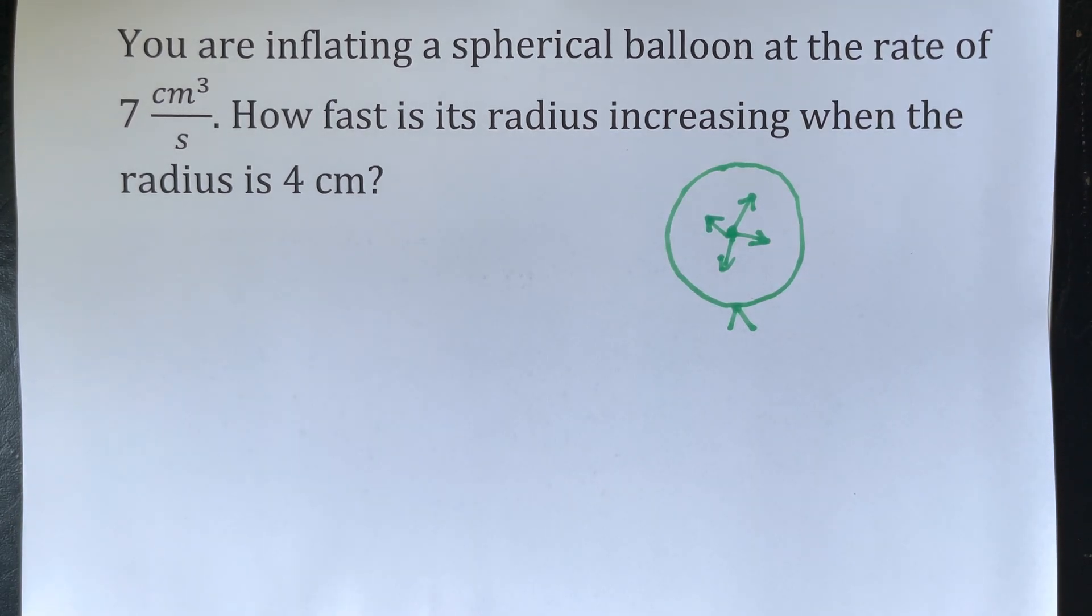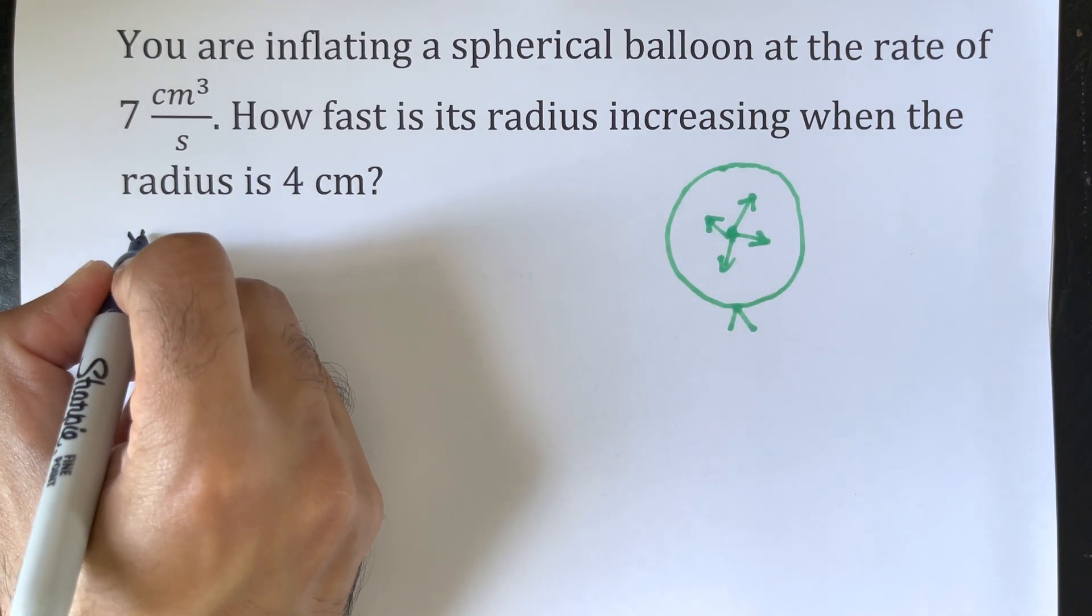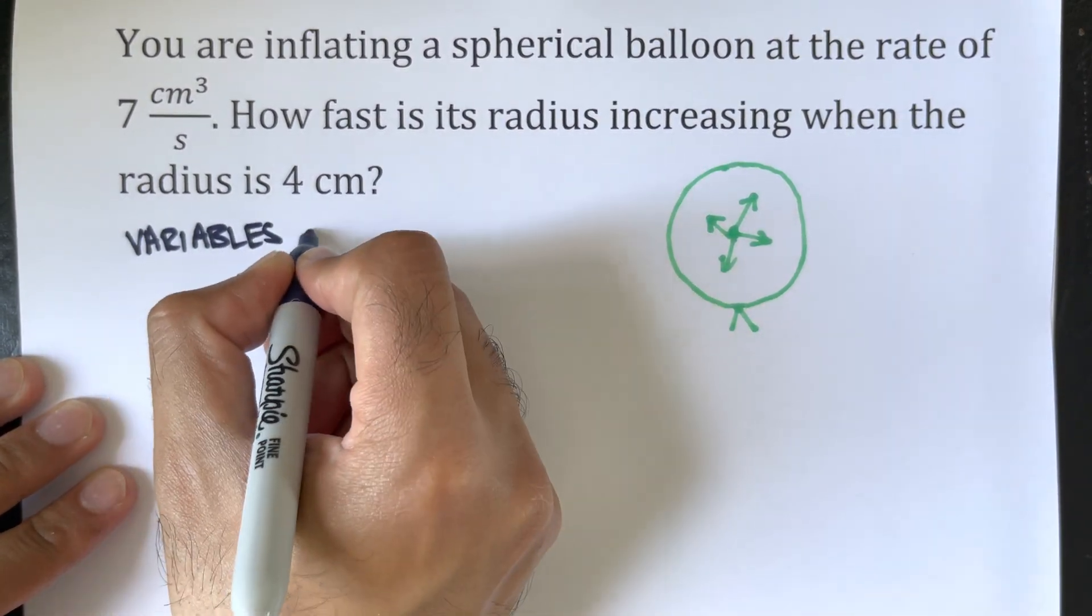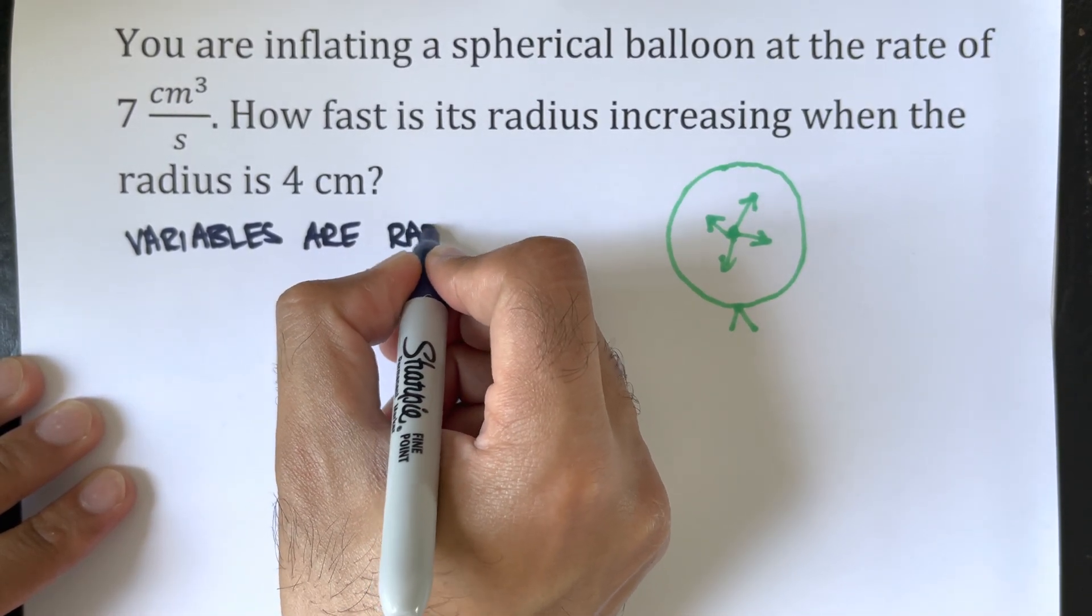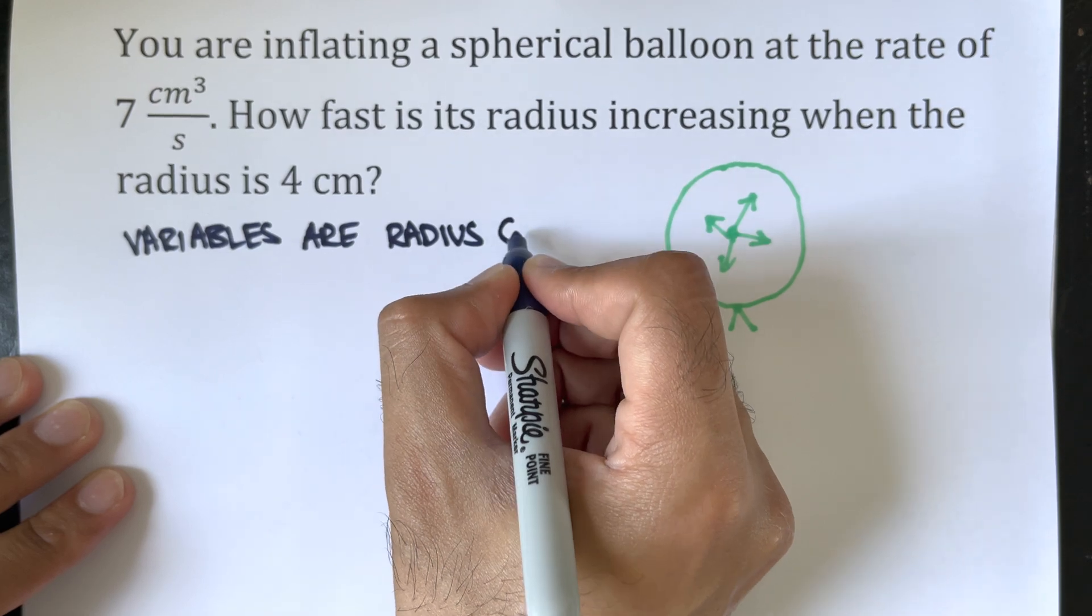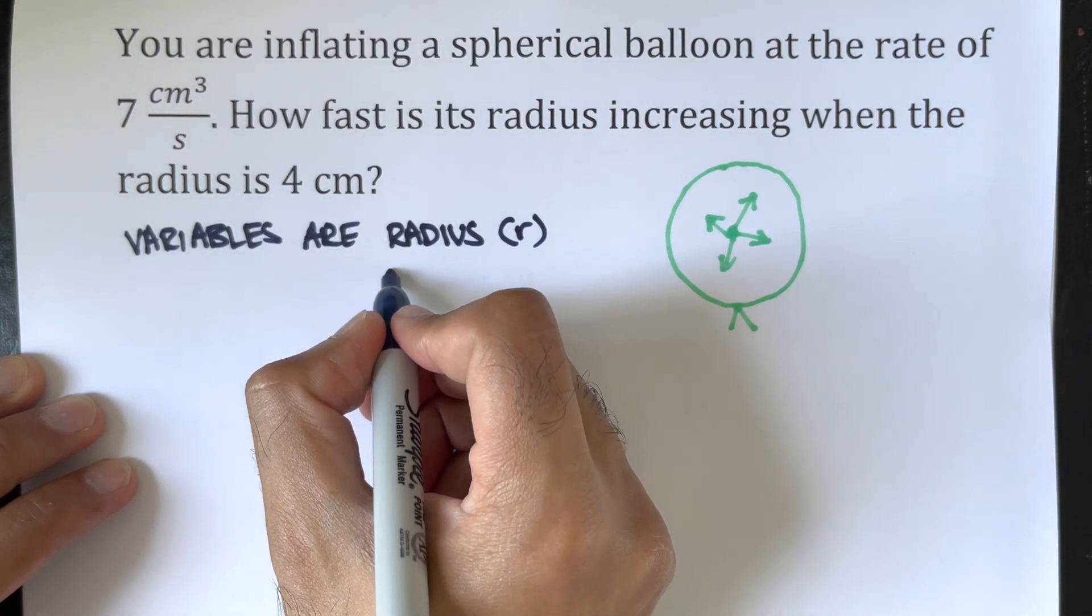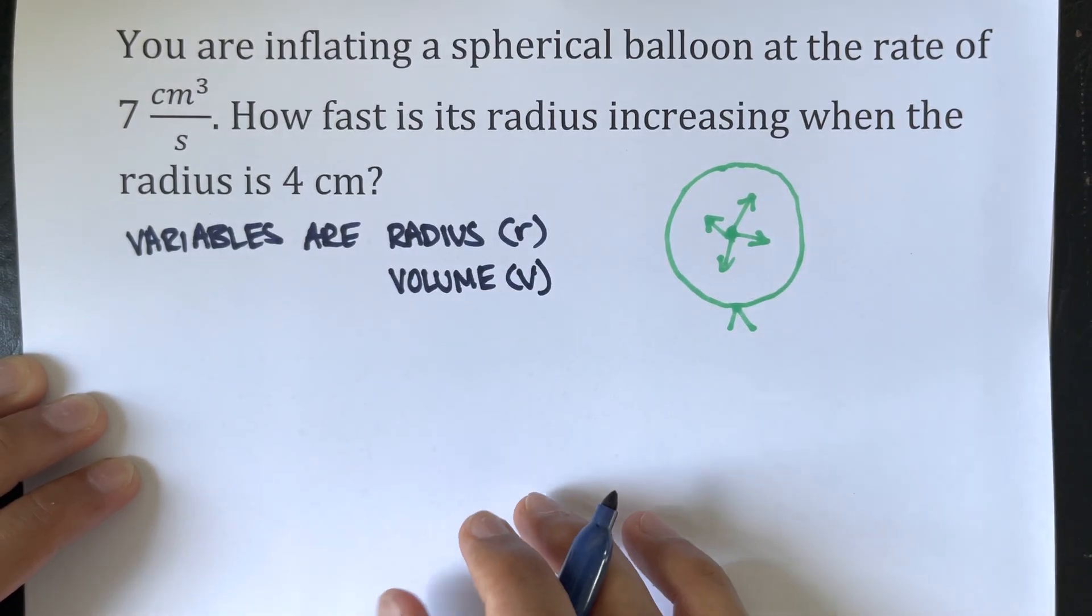At this stage, we know certain variables. The variables we know are its radius, which we will define as r, and the volume, which we will represent as V.